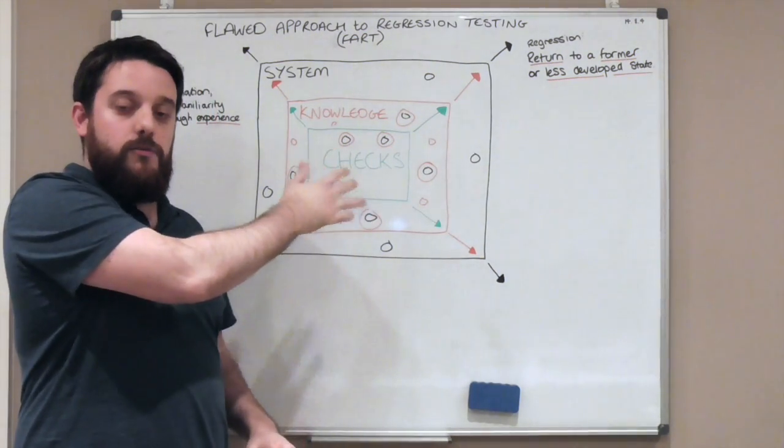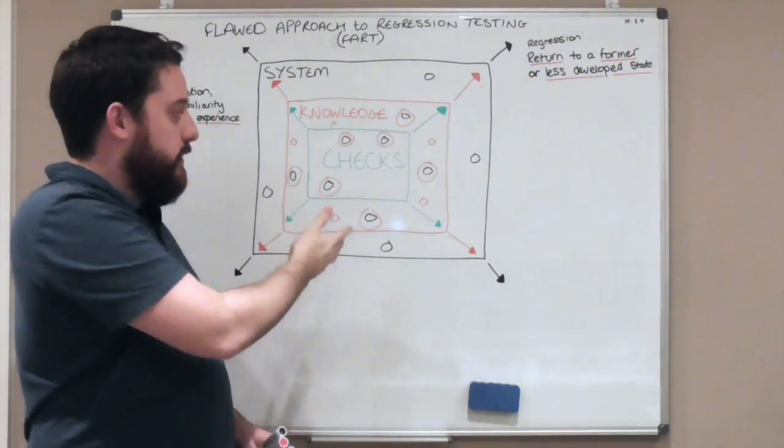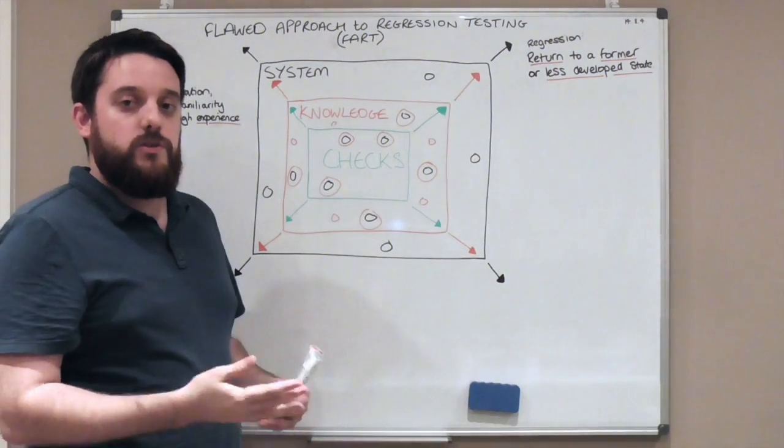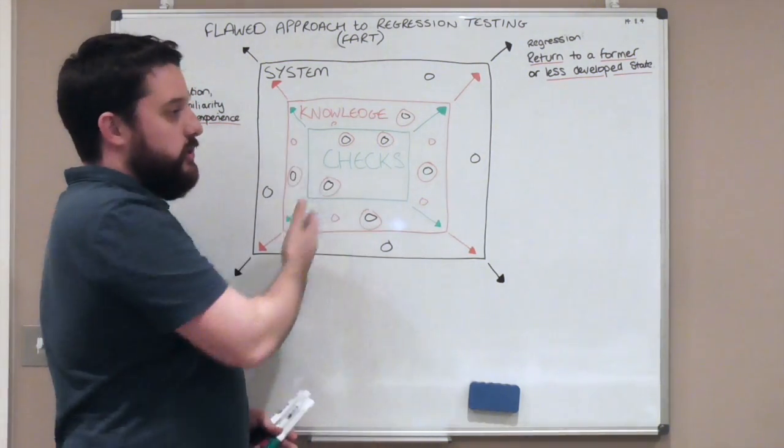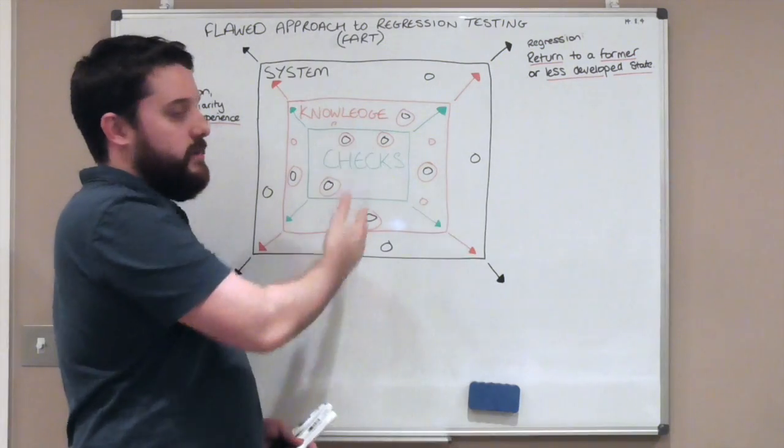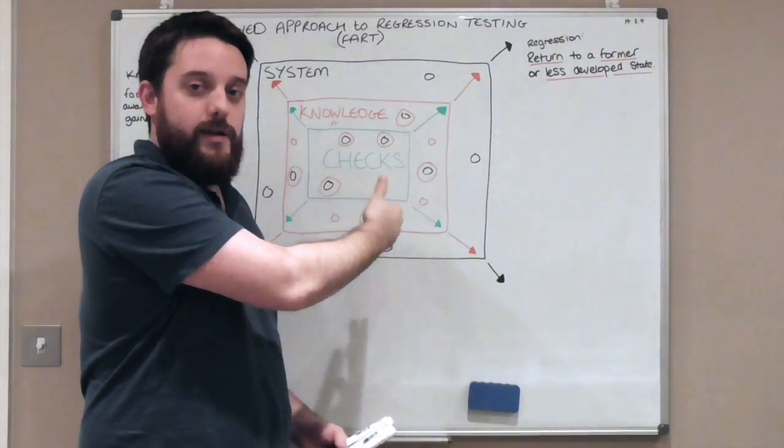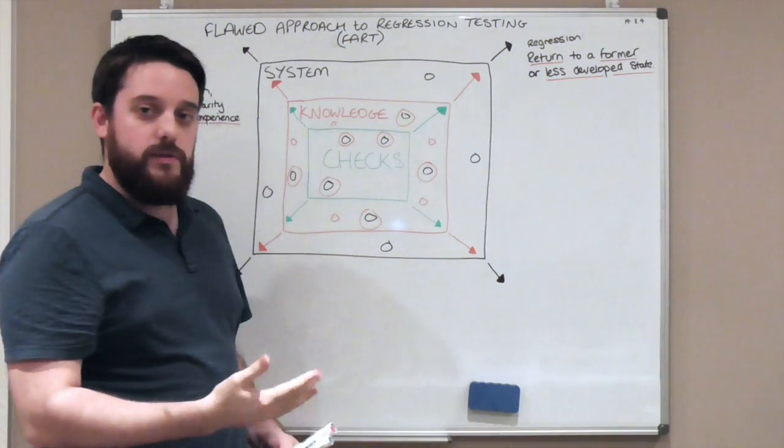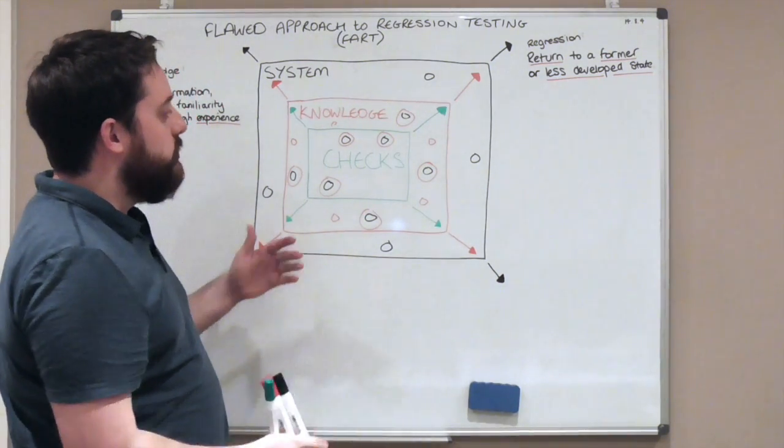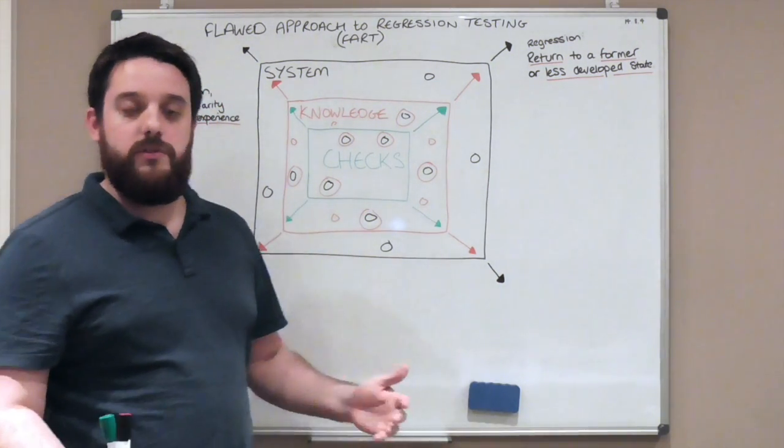Here I've given a definition of knowledge: facts, information, awareness, familiarity, gained through experience. We experience things as humans, but the automation just detects change. I talk about automation, as do others, as being change detection. These checks are great if you understand what they're doing. They're just detecting change against some model.